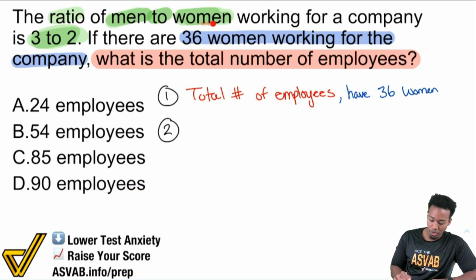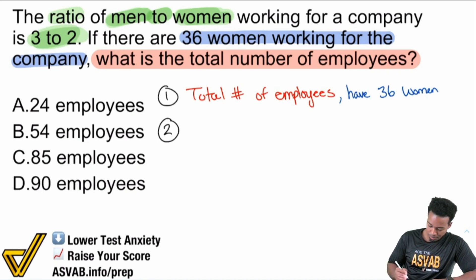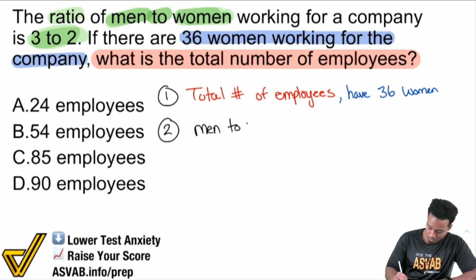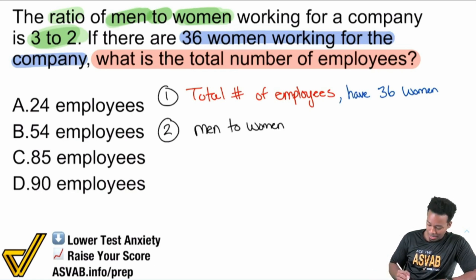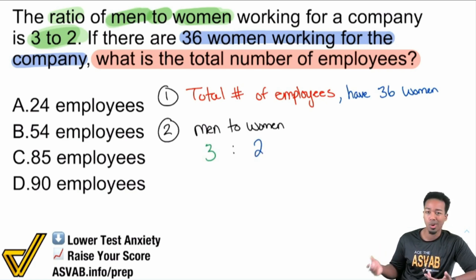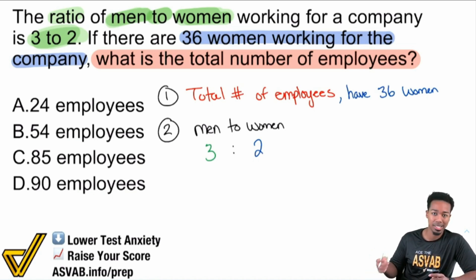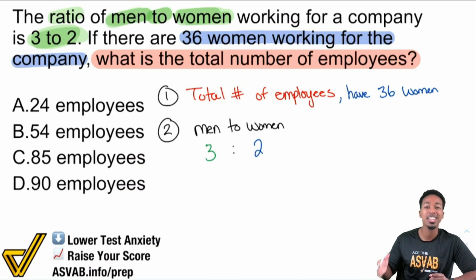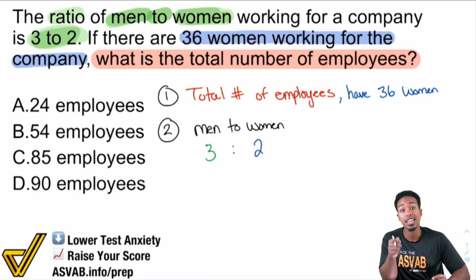They tell us men to women, and we have women and we're looking for total. So let's write that down: men to women is 3 to 2 — we have 3 men for every 2 women. Now we're going to set up a proportion. This is the key, the master key to proportions: compare the same things in the same way.